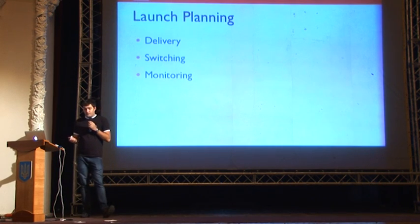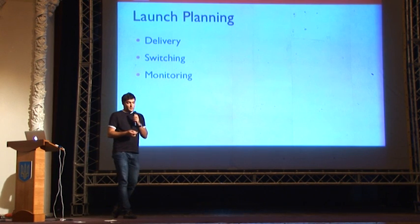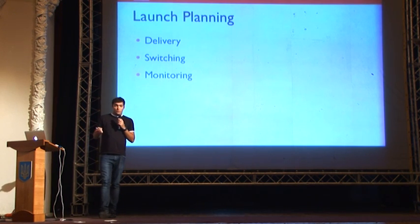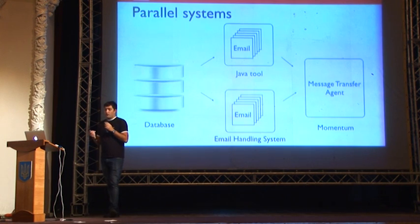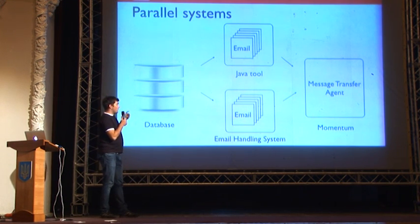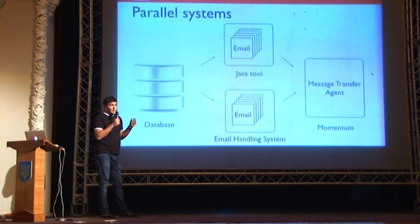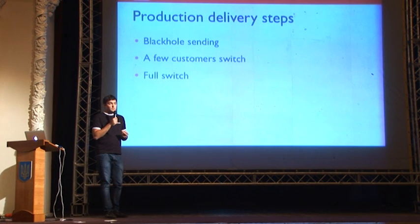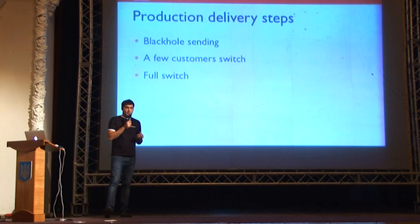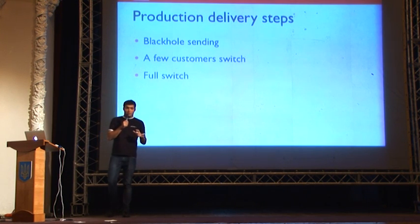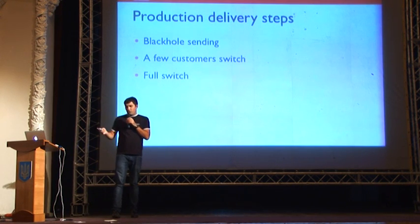We then planned our production launch: first a delivery plan, then a switching plan for moving from the old system to the new, and defining what to monitor. We chose a parallel deployment schema — running old and new systems simultaneously with similar interfaces. We first did black hole sending: taking real data and sending it to /dev/null to test the system on real data. Then we switched groups of customers step by step, and when all went well, we did a full switch.